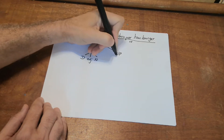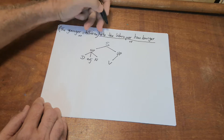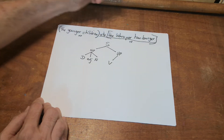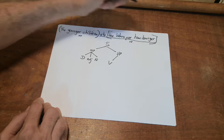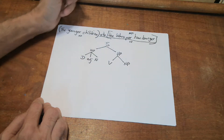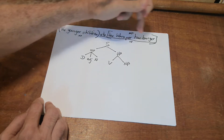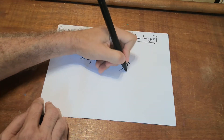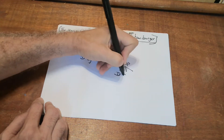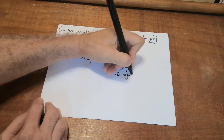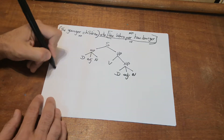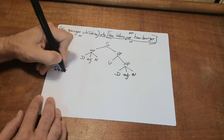The verb phrase has a verb. And then here we have a phrase — a noun phrase. This noun phrase has three elements: one, two, three. 'The' is a determiner, 'whopper' is an adjective, and 'hamburger' is a noun. Now I need to do the rewrite rules.